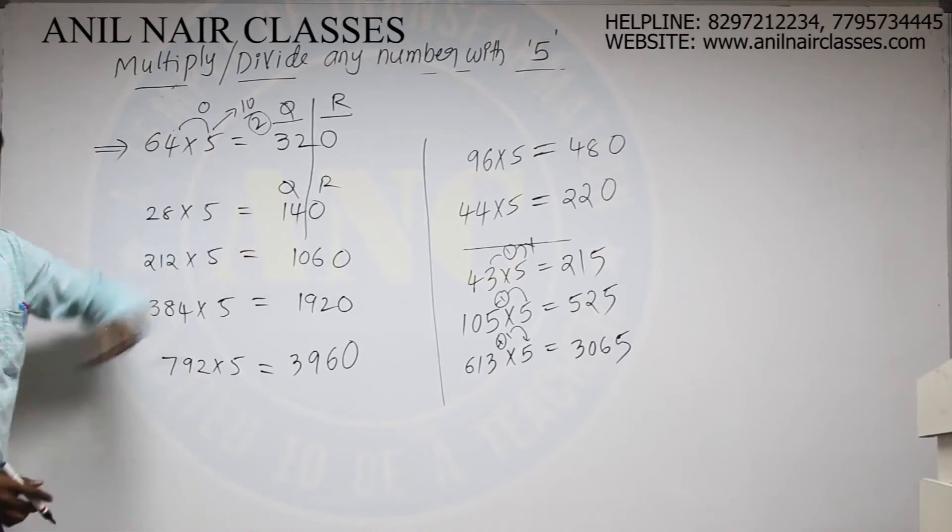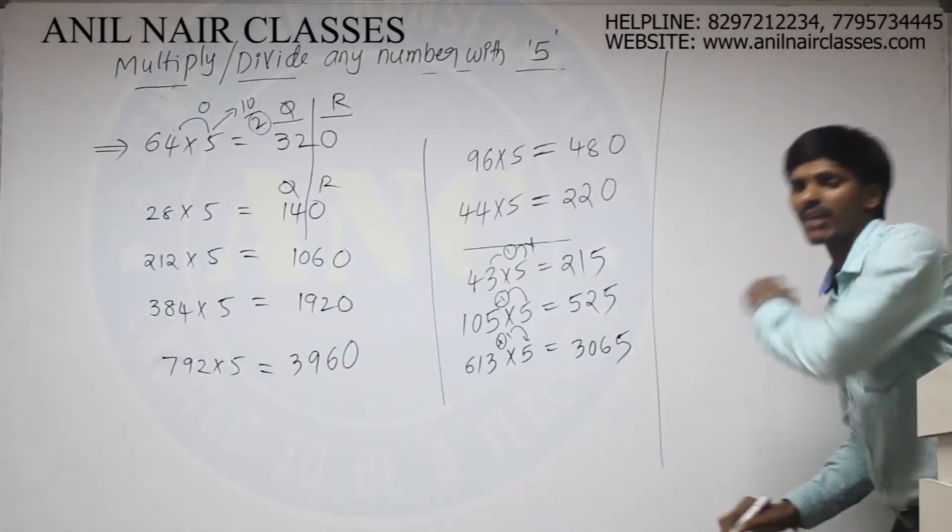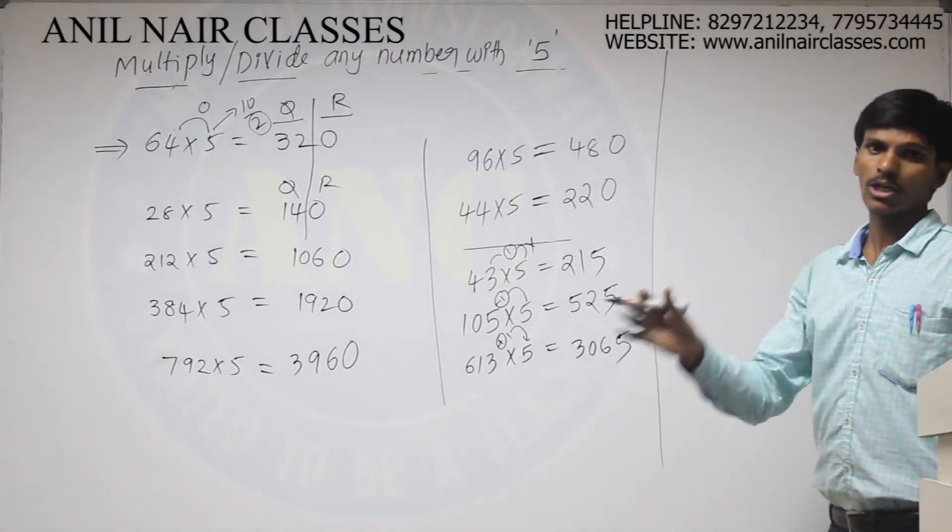Remainder 0, 5, 0, 0. So like this. Now you can multiply any given number with 5 very, very easily. So let us see few other examples.